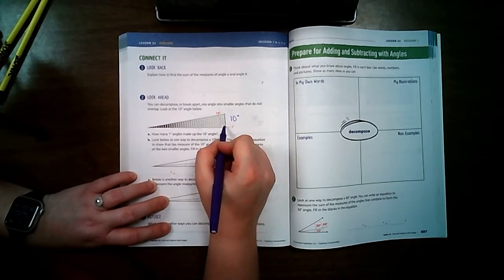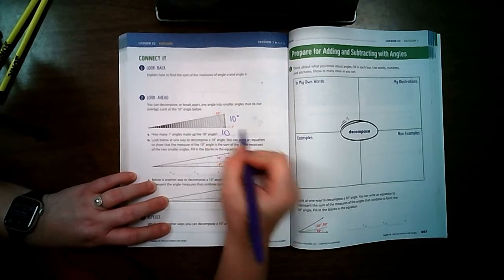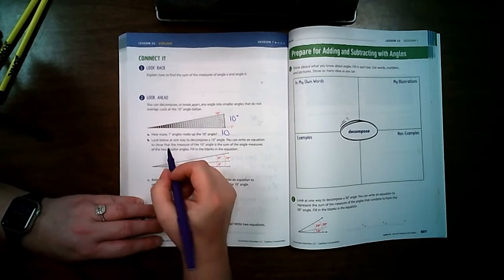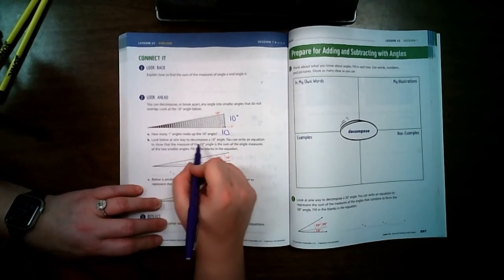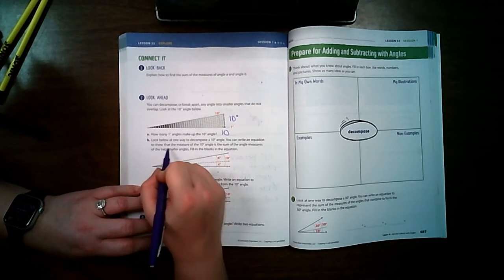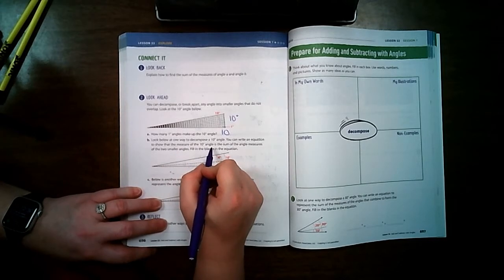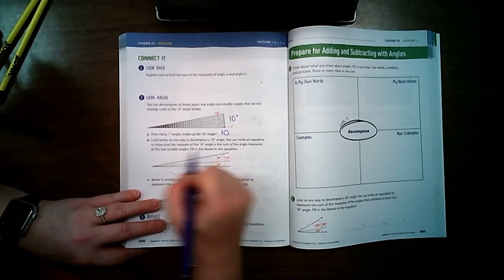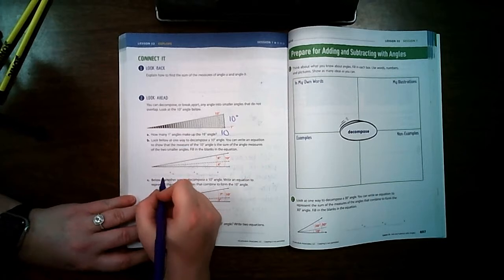Well, if there's 1 degree 10 times, that means there's 10 of them. Now it says look below at one way to decompose a 10 degree angle. You can write an equation to show that measure of the 10 degree angle is the sum of the angle measures of the two smaller angles.